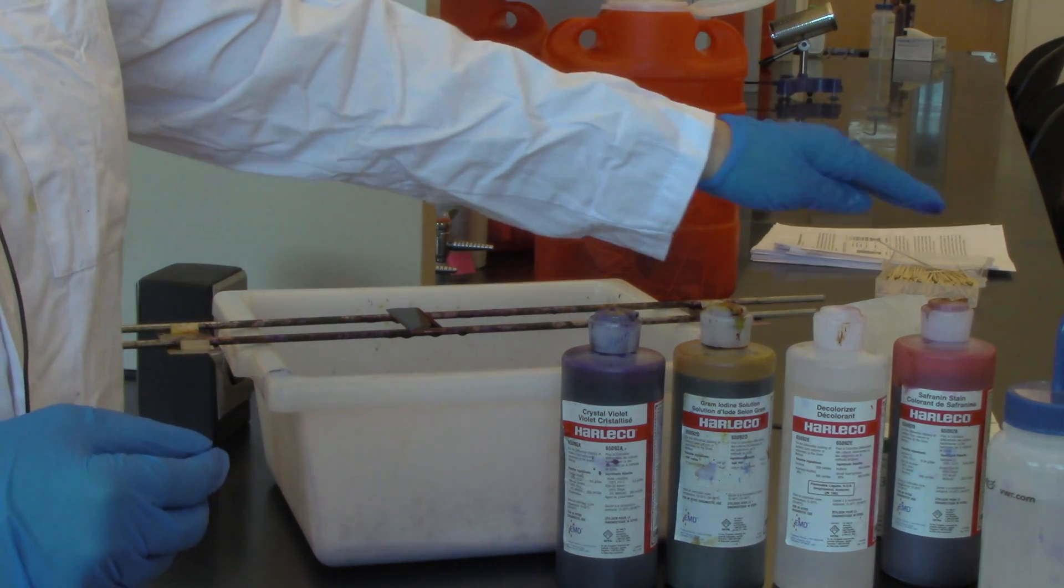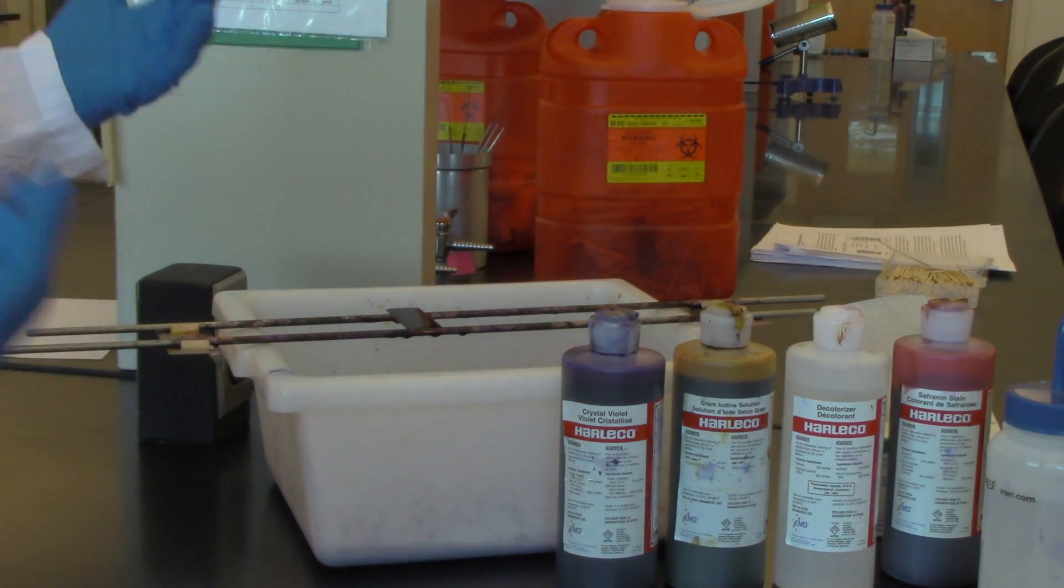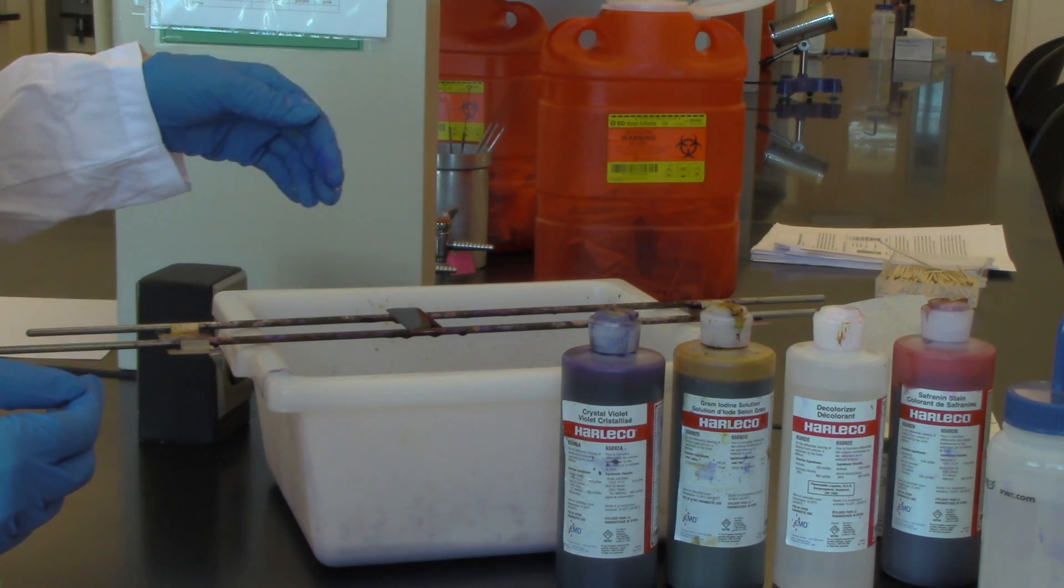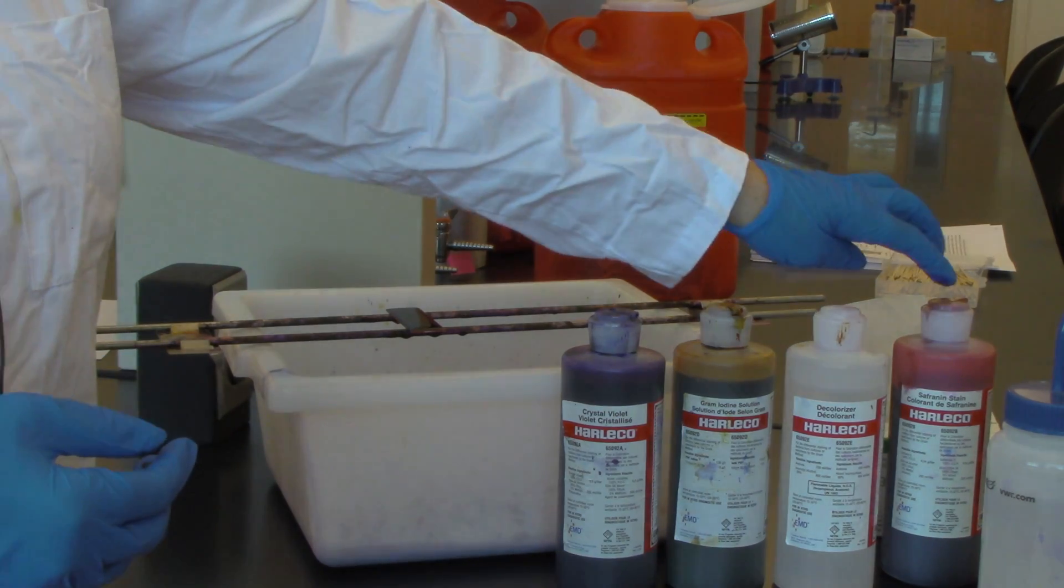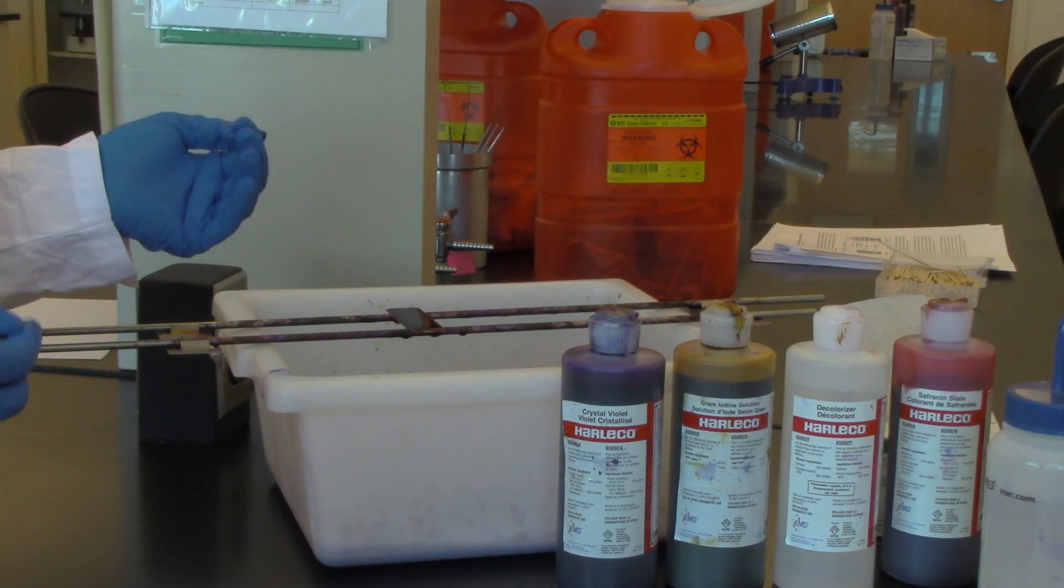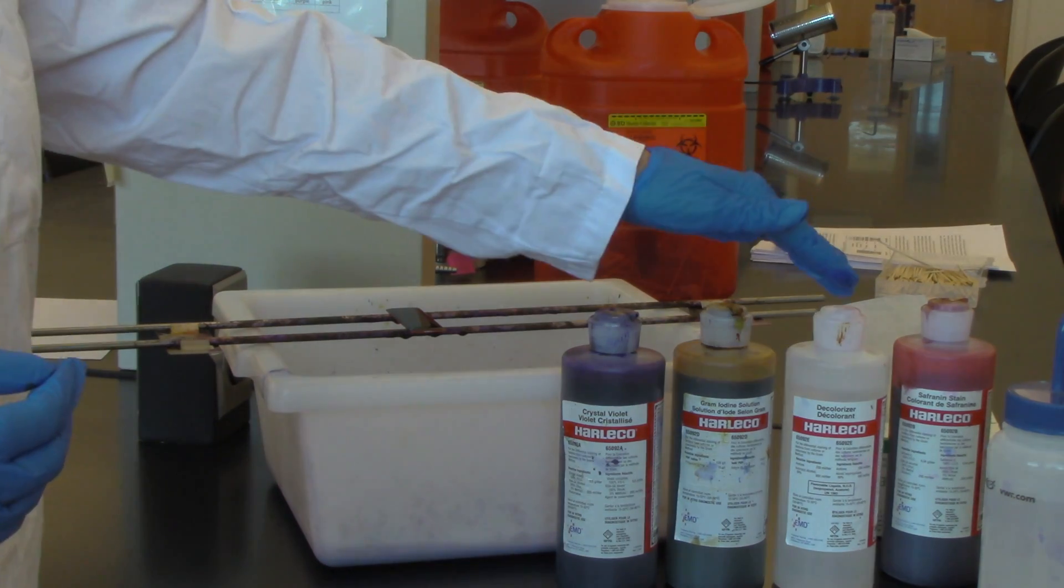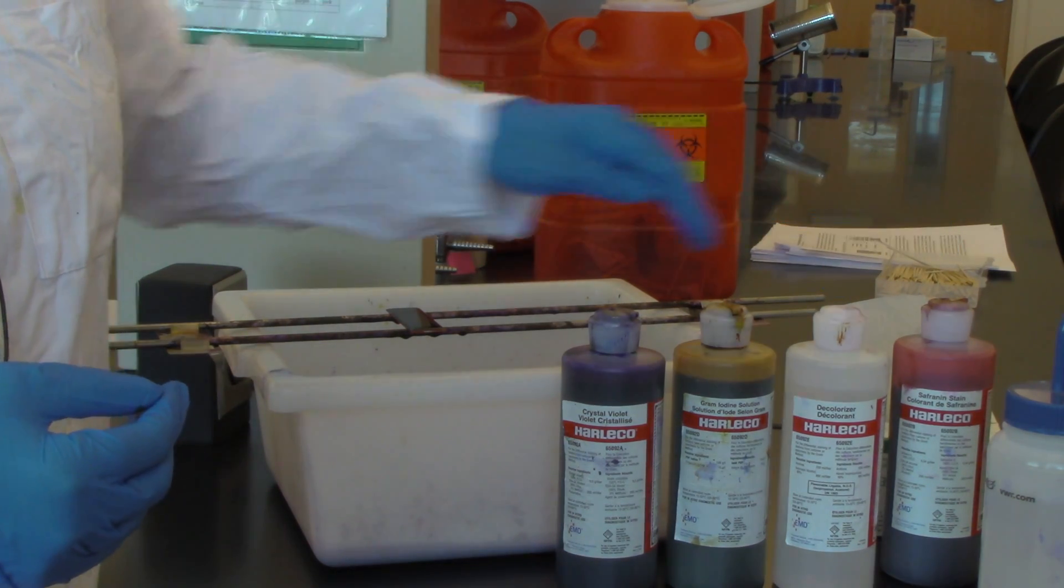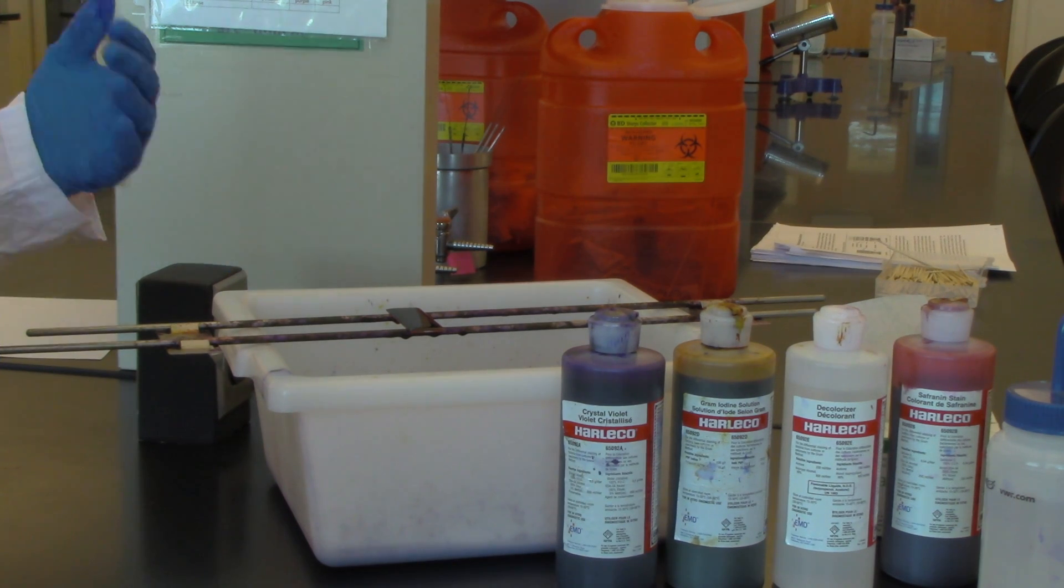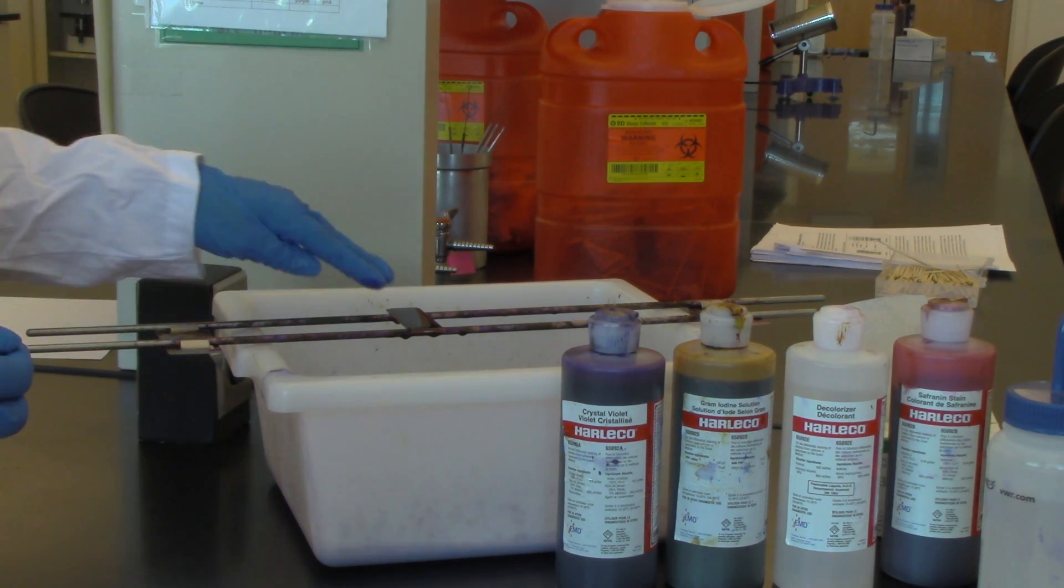So we follow up with the last step anticipating it could possibly be gram-negative or a mixed sample with the safranin. If you were to wash out the stain because it's gram-negative during the decolorizing step, you then would have the safranin which would add some pigment to the cell even if it were gram-negative.